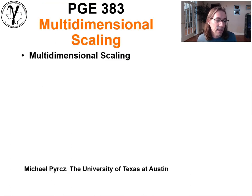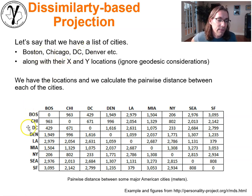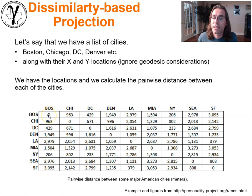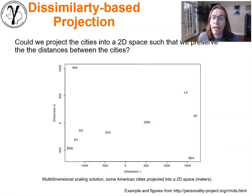Let's get into multidimensional scaling. A great way to get started is to look at this example. Let's say we have a list of cities in the U.S.: Boston, Chicago, D.C., Denver, L.A., Miami, and so forth. All you have is the pairwise distances between each of the cities. We would have a matrix with Boston, Chicago, D.C., Denver, all the way up to San Francisco on both axes, with zeros on the diagonal. The question is: could we project these cities into some space such that we preserve the pairwise distances? And if we did that, this would be one possible solution.